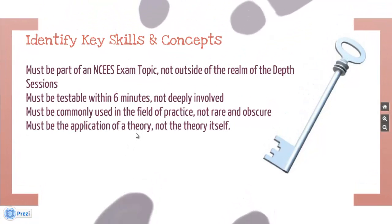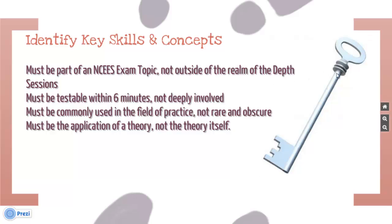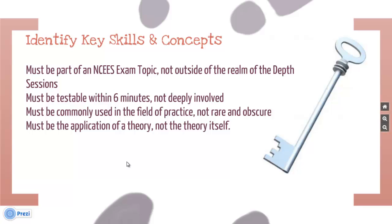The next step is to use your references and the NCEES outline to determine what the key concepts and skills are for the mechanical PE exam. It is recommended to use the following criteria to help determine what is important. First, the skill or content must be within an NCEES exam topic, not outside the realm of the depth sessions. Second, it must be testable within six minutes — not deeply involved. The exam consists of 80 problems and the time limit is eight hours, or 480 minutes, which results in six minutes per problem. Thus, the questions cannot be deeply involved or require difficult, time-consuming calculations.